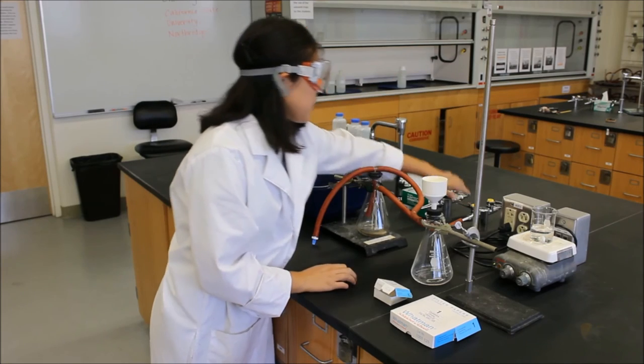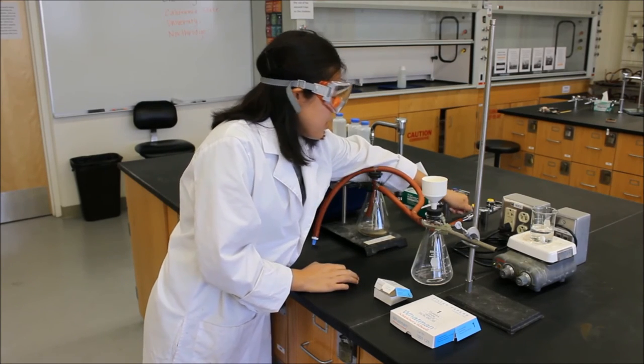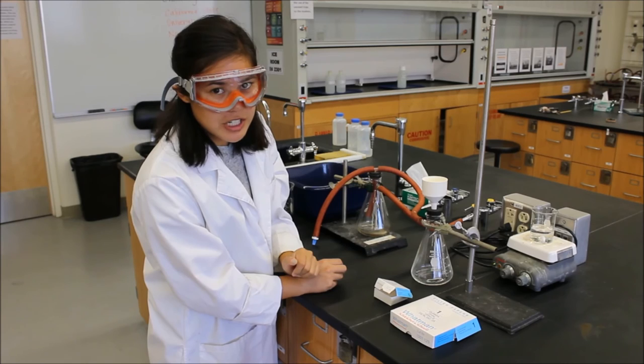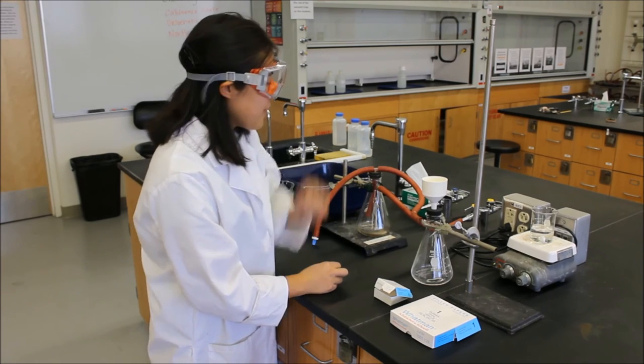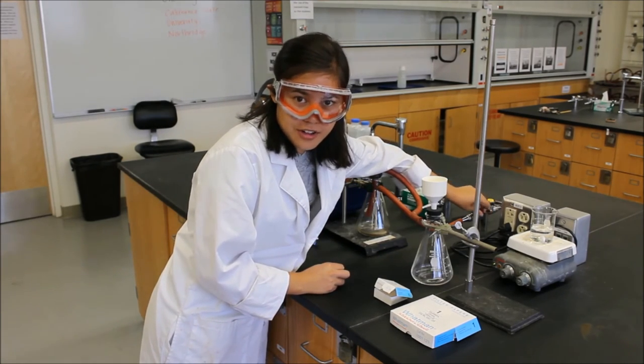Once they're connected and everything's all good, you can go ahead and turn on the vacuum. Remember, it's on when it's pointing in the same direction that the tubing is going. If you turn it too far, it'll just turn off.